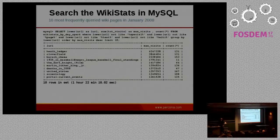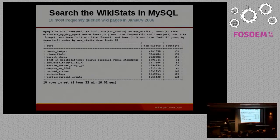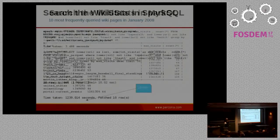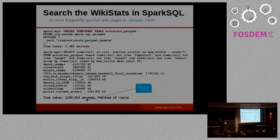We read all the Wikistats data, and now let's try to use Spark for reads and data analysis. For this comparison, we want to find the 10 most frequently queried Wikipedia pages in January 2008. For MySQL, it took one hour and 22 minutes just to receive those 10 rows. With Spark, it took only 20 minutes. Impressive.